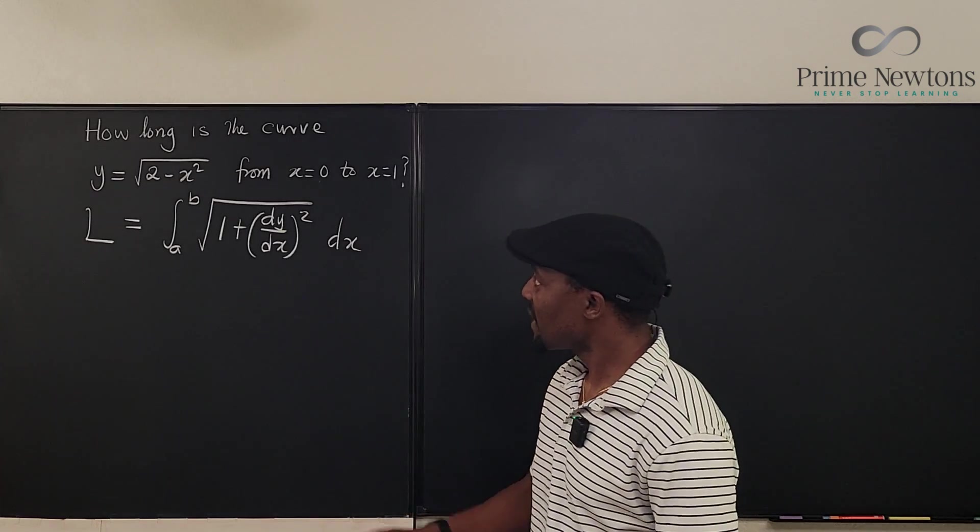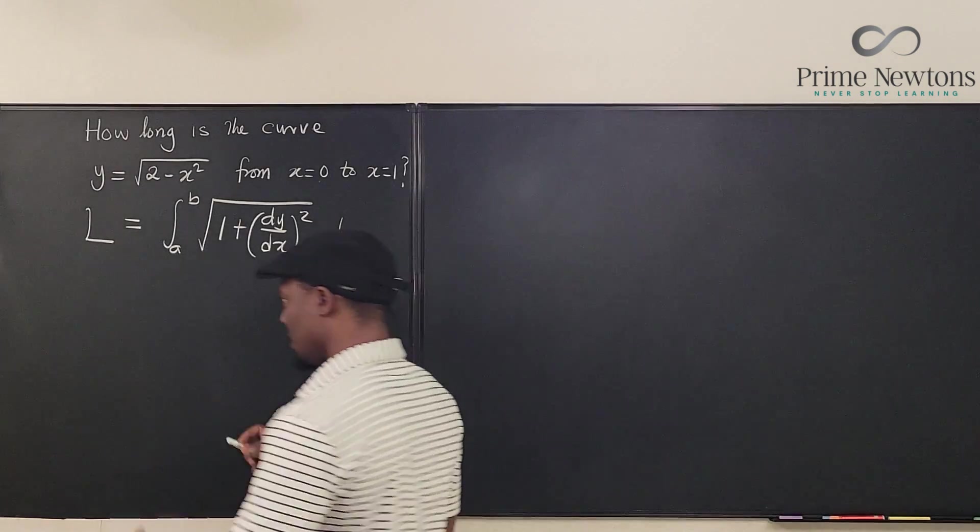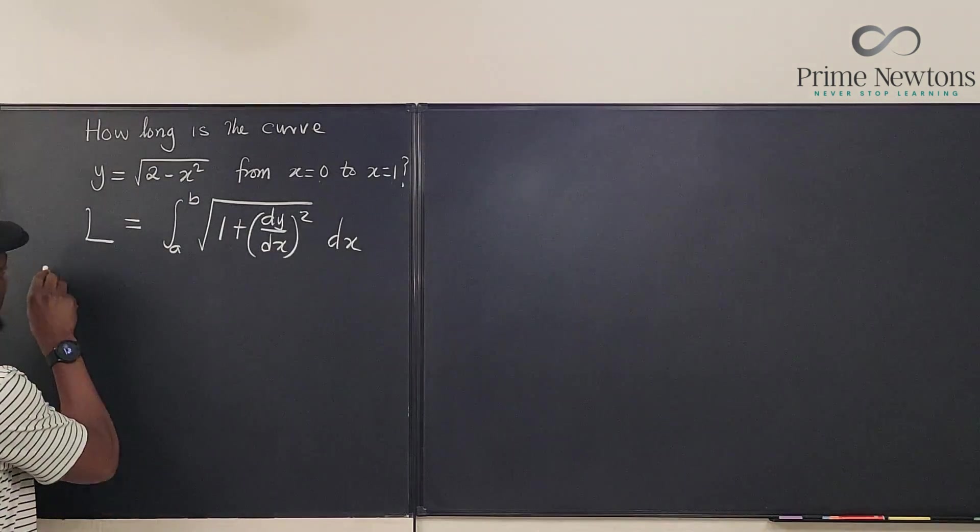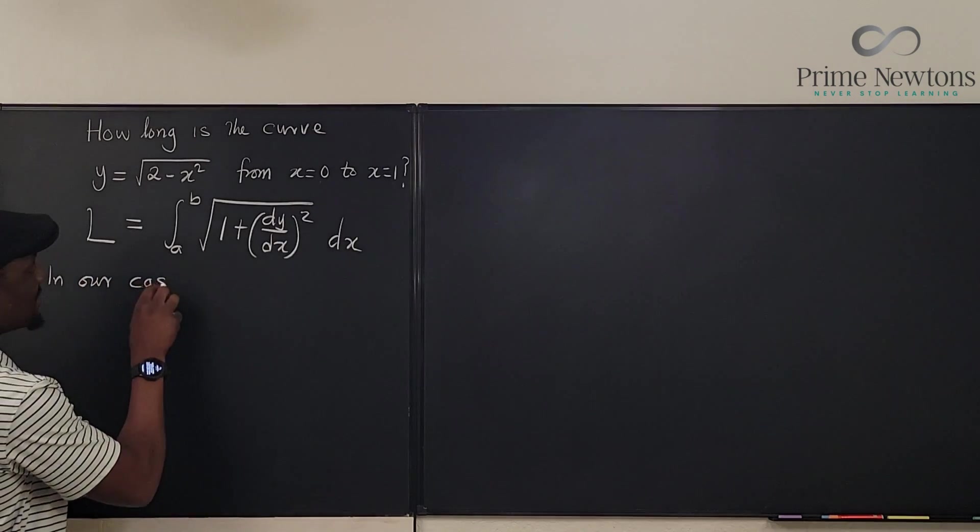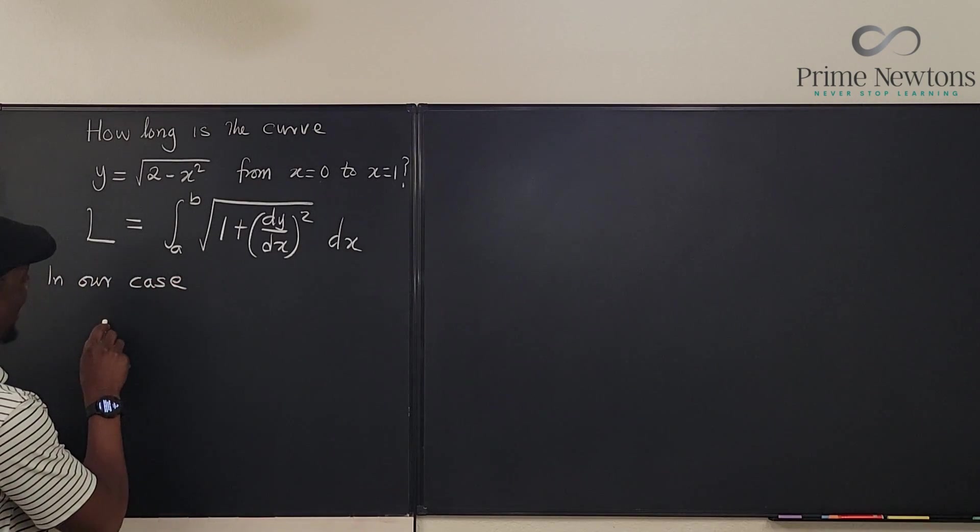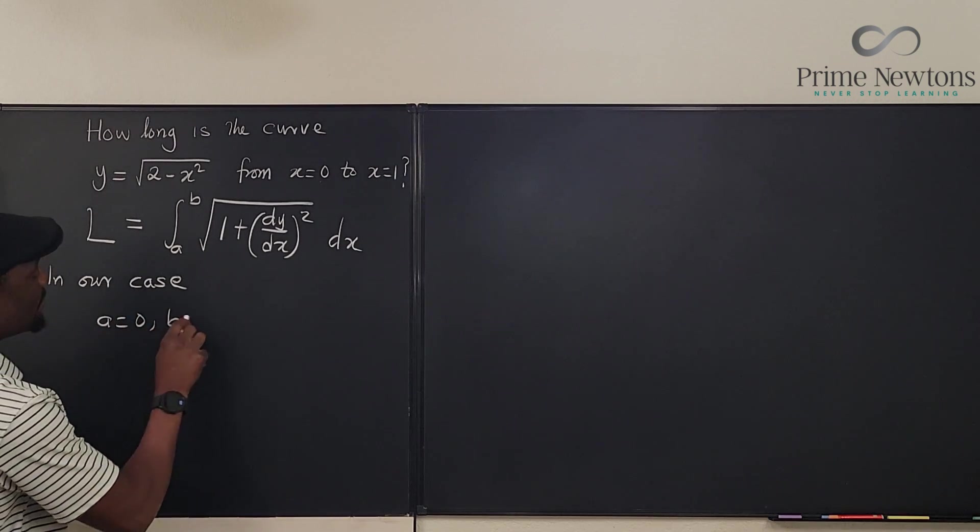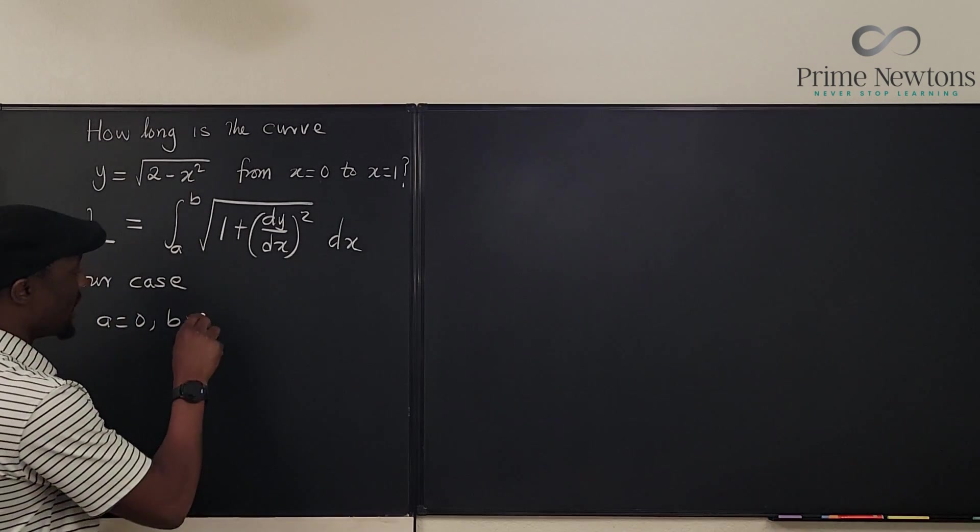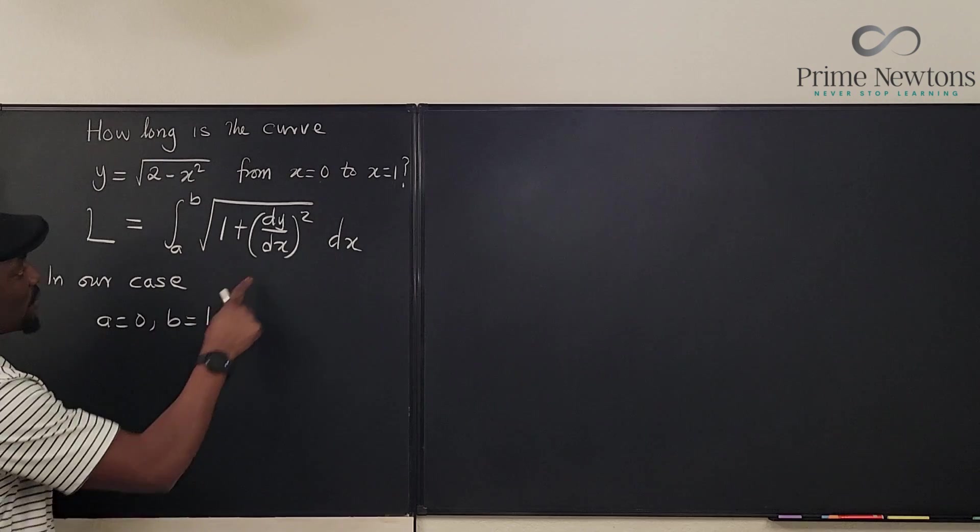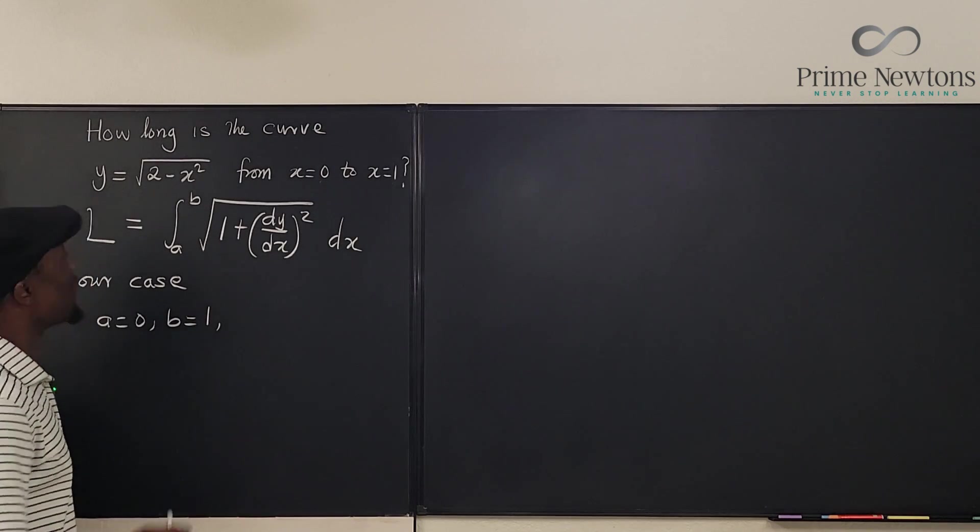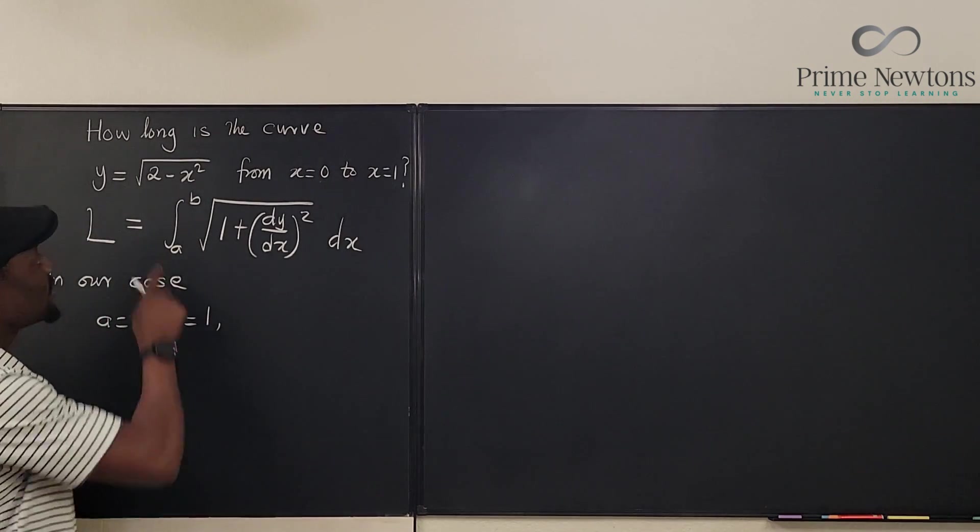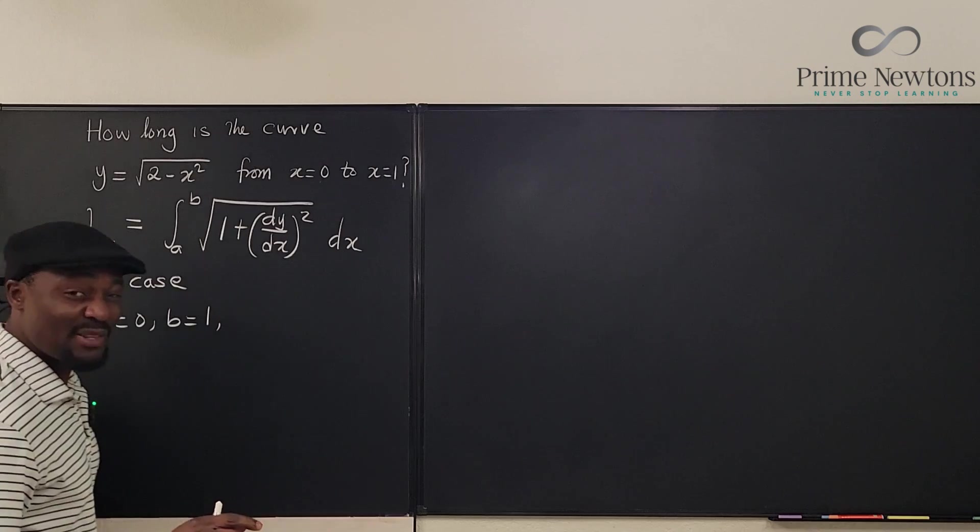So let's go here. For this case, in our case, what do we have? We have a equals 0, b is equal to 1. And the only thing we need is dy/dx. What is dy/dx? Well, we have to use the chain rule. And by the way, if you pay attention to this again, you can tell that this is a part of a circle.